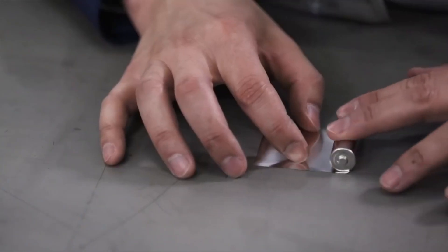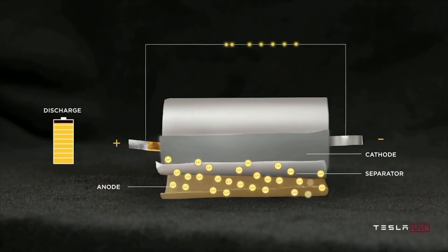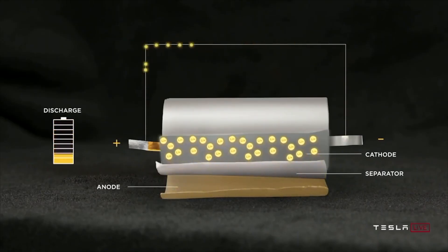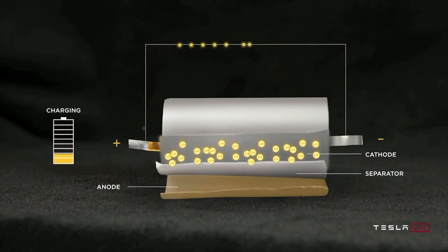As such, Tesla only receives a very limited number of these batteries from the field, and they tend to be from vehicles that have seen extensive use, such as taxis.